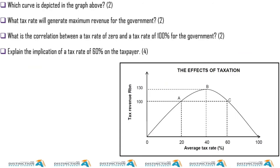Over to you. Right, another Laffer Curve — I don't need to really explain it, I did before. That is the Laffer Curve. What tax rate will government maximize their revenue? That will be 40 percent. You see it's different — the other one we had was 45 percent.